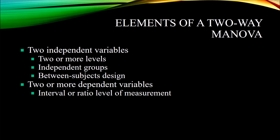Looking at the elements of a two-way MANOVA: you need two independent variables (two factors), each with two or more levels. The levels need to be independent — you need independent groups — and this is a between-subjects design, so a participant belongs to only one level of each independent variable. You also need two or more dependent variables, which, just as in ANOVA, must be measured at the interval or ratio level of measurement, referred to as the continuous level of measurement.